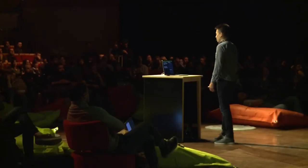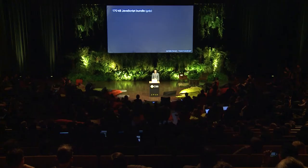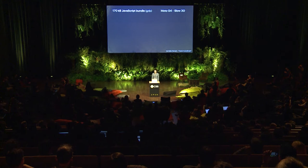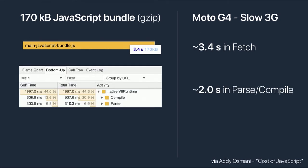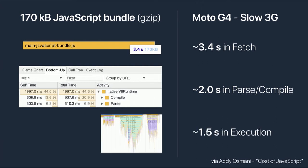You're probably wondering why any of this matters. I want to show a great example from an article titled 'Cost of JavaScript' by Addy Osmani. Suppose we have an app with a 170 KB compressed JavaScript bundle, and we're using a Moto G4 on a slow 3G connection. With this phone on this network, it takes 3.4 seconds just to fetch the bundle. On top of that, the browser has to parse and compile the scripts — about two full seconds — and finally 1.5 seconds to execute. JavaScript can be incredibly costly, especially on slower hardware. The user will be waiting several seconds before the app is ready, and this is a relatively new phone.